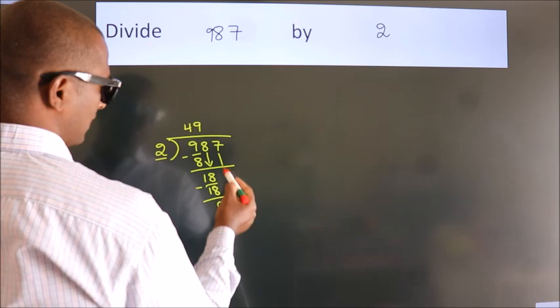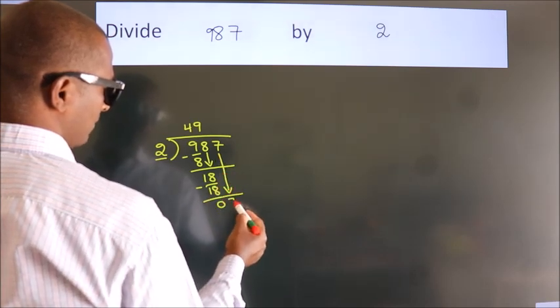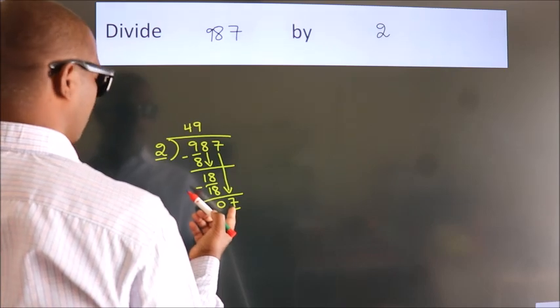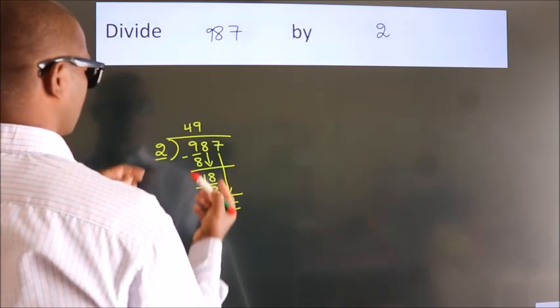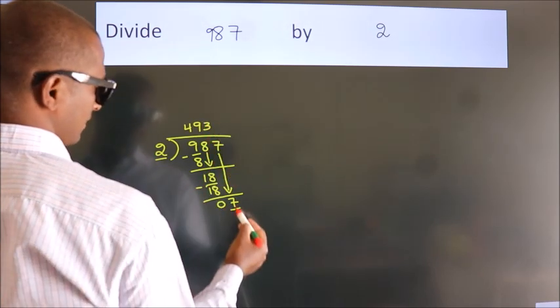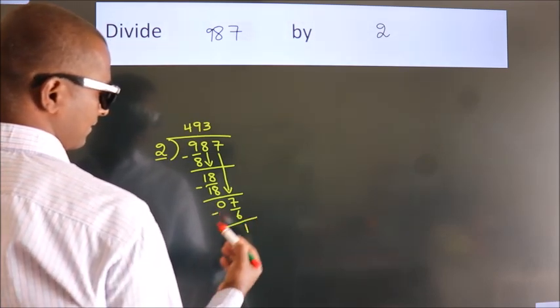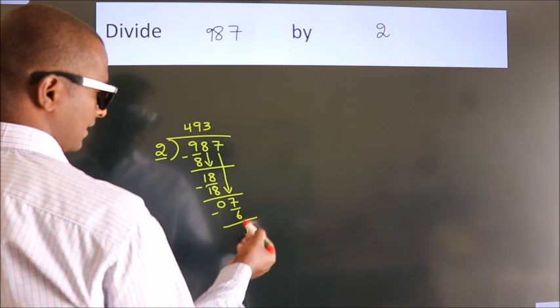After this, bring down the beside number. 7 down, so 7. A number close to 7 in the 2 table is 2 times 3, 6. Now we subtract and get 1.